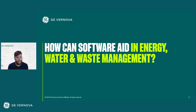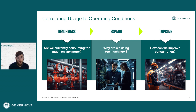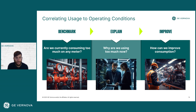This is where we at GE Digital see a tremendous opportunity for software to aid in managing energy, water, utilities, and waste more efficiently. So let's dig into some of the dimensions that software can provide value. The first is correlating usage to operating conditions and answering two fundamental questions: how much is actually being consumed, and is that consumption too much given our targets, our budgets, or any of the utility types being consumed in a manufacturer's production environment? Then explaining that consumption in context to understand why consumption is too great, and ultimately driving toward the actions that can be taken to optimize and improve consumption.